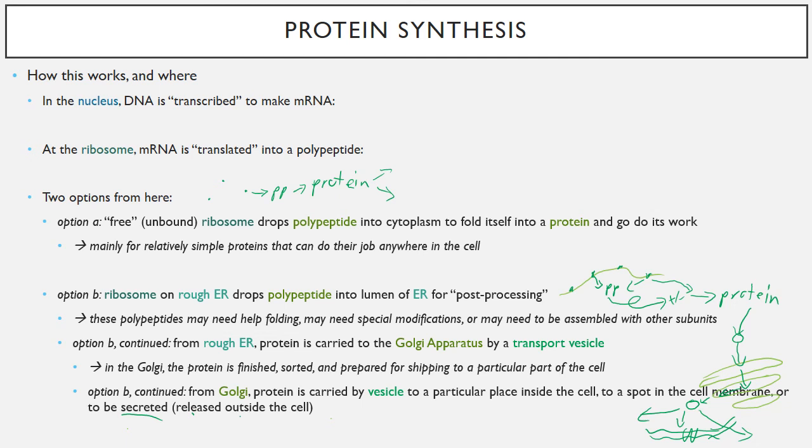The protein is now carried by a vesicle to one of three places. It can go to a particular spot inside the cell, it can go to the cell membrane itself, or it can go outside the cell. In that case, we say that the protein is secreted outside the cell. An example of this would be if you were a fibroblast making collagen in a tissue, or if you're a pancreas cell trying to make the hormone insulin.